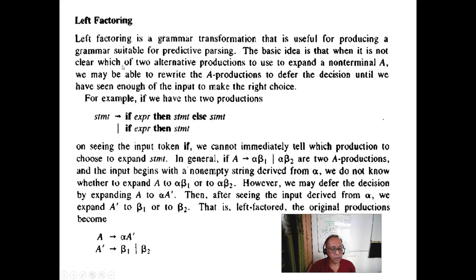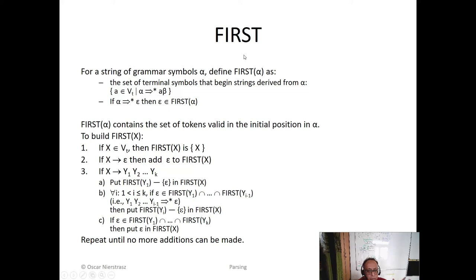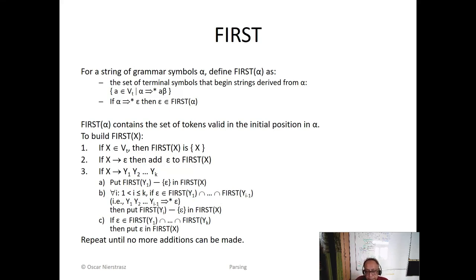For top-down parsing we add E-dash and T-dash to remove left recursion. The FIRST calculation: if X goes to Y Z, then FIRST(X) includes FIRST(Y); if Y can derive epsilon, you also include FIRST(Z). If a variable can go to epsilon, you include epsilon; but if it reaches dollar, you do not include dollar in FIRST. FOLLOW calculation is a bit tougher — you first calculate FIRST, then FOLLOW. The start symbol always has dollar in its FOLLOW set, and wherever a non-terminal appears on the right-hand side, you take FIRST of what follows it.